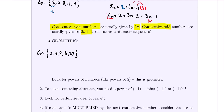Looking at this sequence, to go from 2 to 4, then 4 to 8, you're multiplying by 2 each time. This number is known as the common ratio, usually denoted by r. Once you spot the common ratio and know you're dealing with a geometric sequence, the formula for the nth term is: a sub n equals the first term times the common ratio raised to n minus 1.